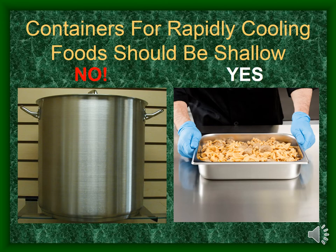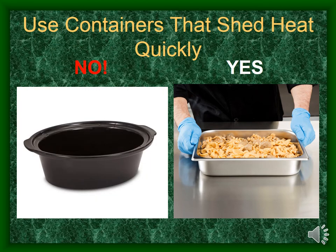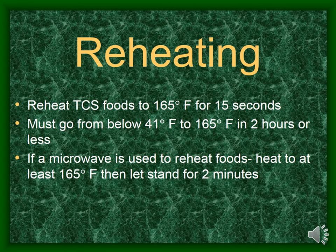There are many different techniques you can use to cool foods properly and quickly. You should use shallow containers as opposed to deeper containers — the stock pot is too deep, the shallower pan is better. Also, you want to use containers that shed heat quickly. Stoneware is designed to retain heat, so it is not a good container for cooling foods down. Metal sheds heat much more quickly.